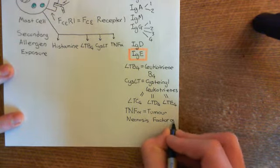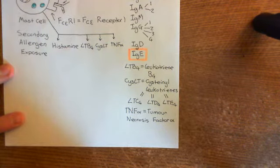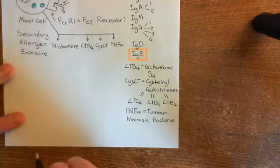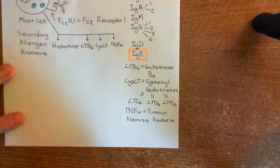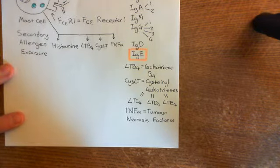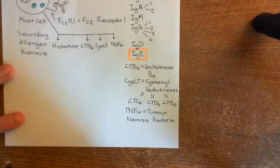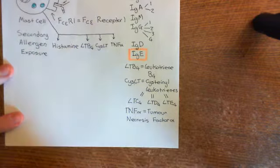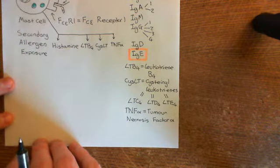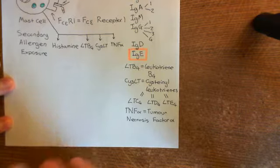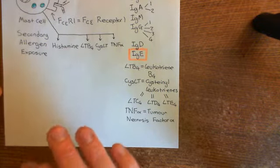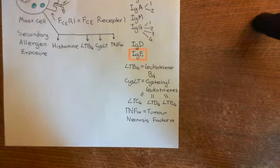Tumor necrosis factor alpha is often just referred to as tumor necrosis factor. Although there are others such as TNF-beta and TNF-C, TNF-alpha is easily the most important. If anyone talks about tumor necrosis factor without clarifying which one, you can assume they mean this one. These four pro-inflammatory mediators are the main ones released by mast cells upon secondary allergen exposure.